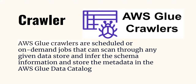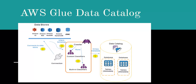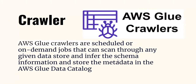With the understanding of databases and tables, let's understand what a crawler is. A crawler scans through your data store — it can scan through S3, RDS, or whatever. Basically, a crawler is a job that scans through your data store, infers the schema, and then writes that metadata into a database in the AWS Glue catalog.